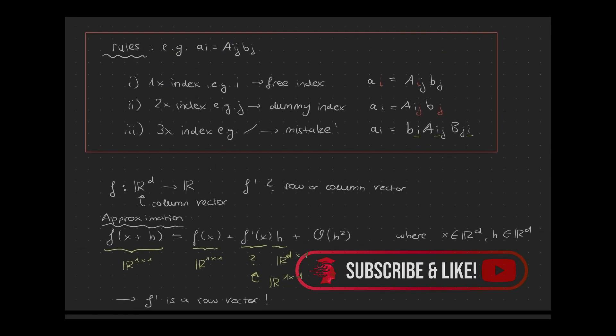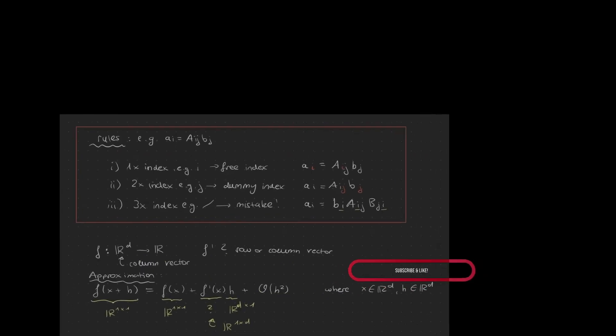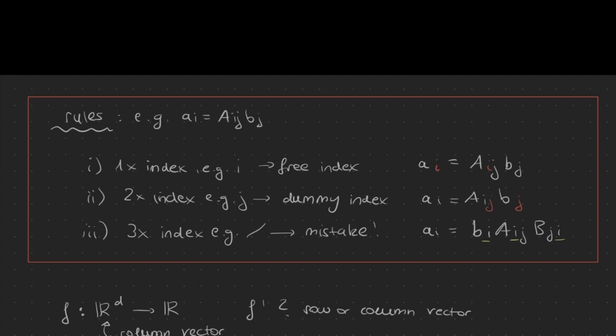Now some rules before we start with the computations. Suppose we have the expression a_i = A_ij * b_j, where A_ij is an element out of a matrix — specifically the i-th row and j-th column element — and b_j is the j-th component of the vector b. This is a simple matrix product with a column vector that results in another column vector a. In Einstein notation we always look at the components, so we denote a as a_i. The first rule is: whenever an index appears only once, like i here, it is called a free index, which implies that the left-hand side of an equation must have an equal number of free indices as the right-hand side.